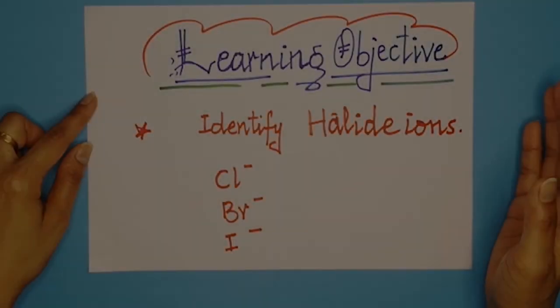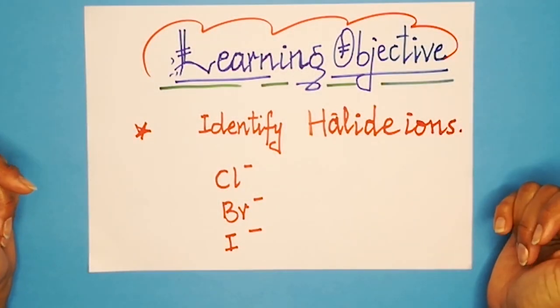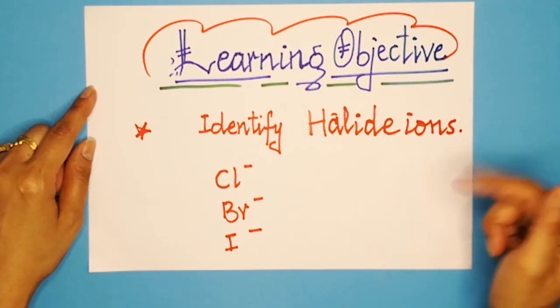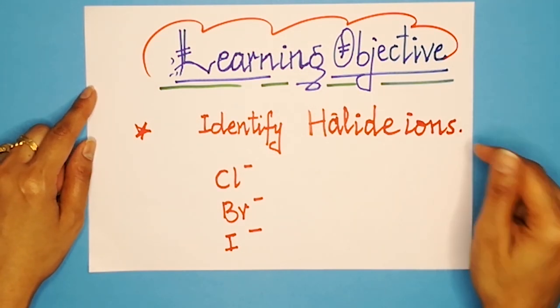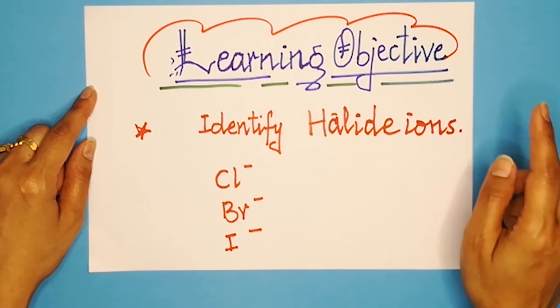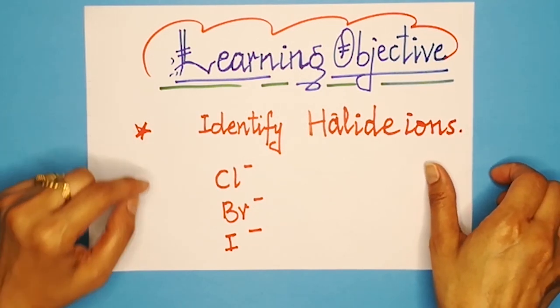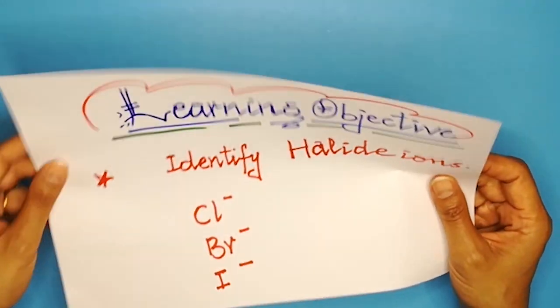Assalamu alaikum guys, today we are going to start a new topic on identification of anions. In the first part, we will identify the halide ions. There will be a trick to memorize this identification of anions. You will not only identify the halide ions, but also find a trick to memorize these ions, which I will share at the end of the lesson.